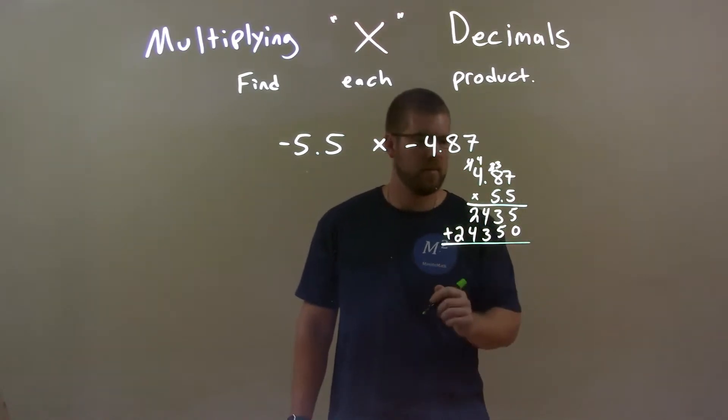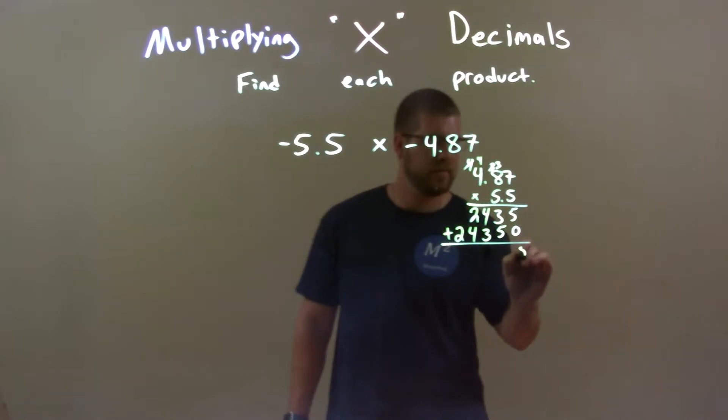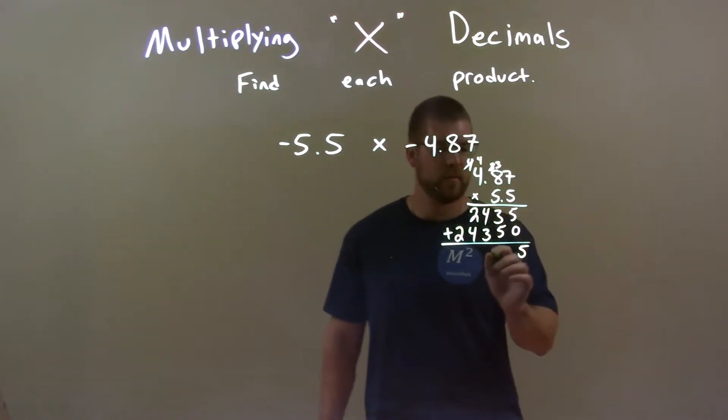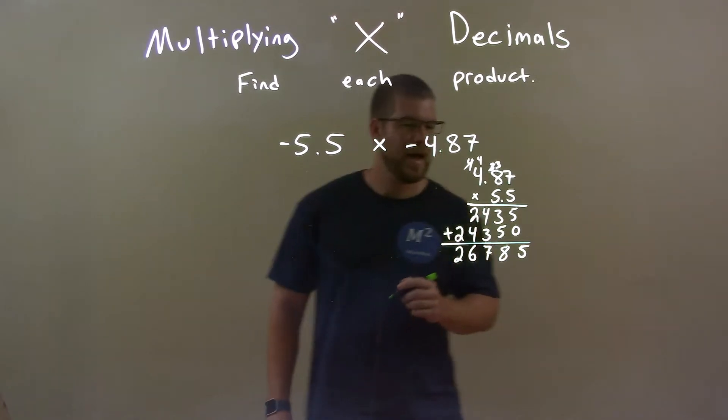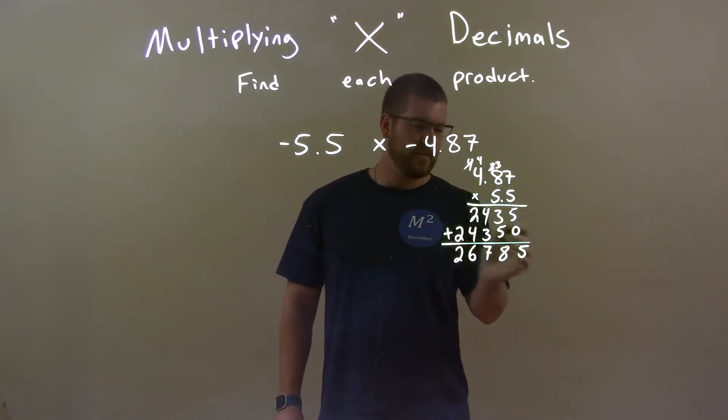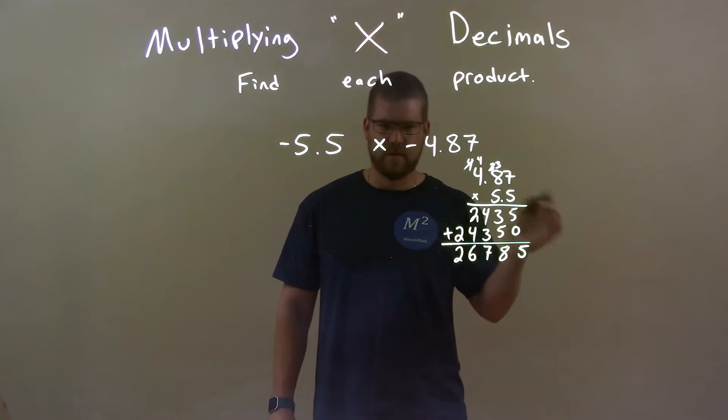And now we add these two numbers together. 5 plus 0 is 5. 3 plus 5 is 8. 4 plus 3 is 7. 2 plus 4 is 6. And 2 plus nothing is 2. Now, we had a total of 26,785.